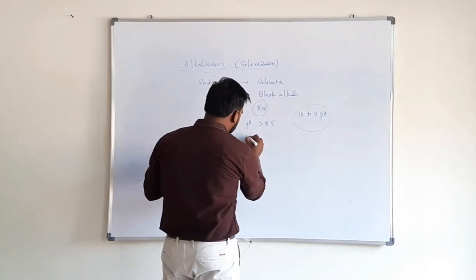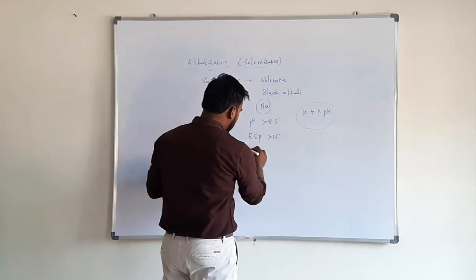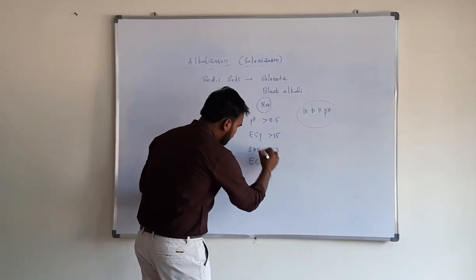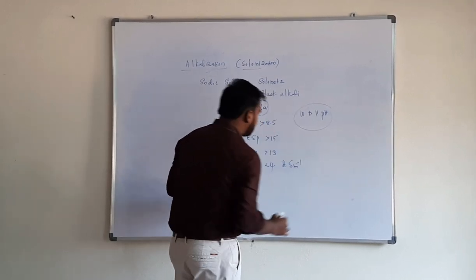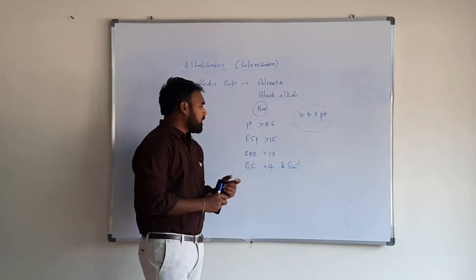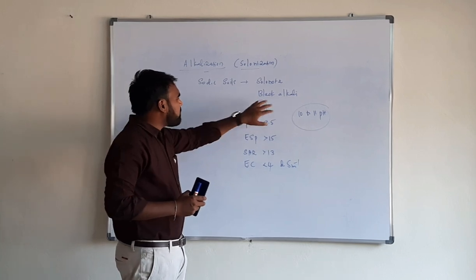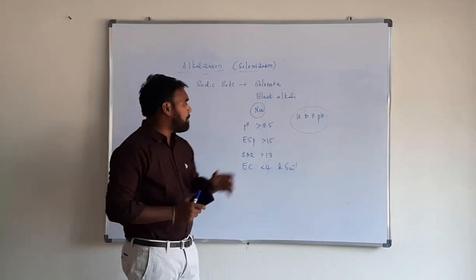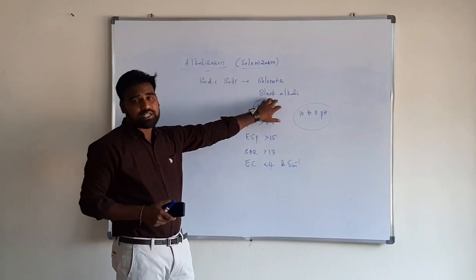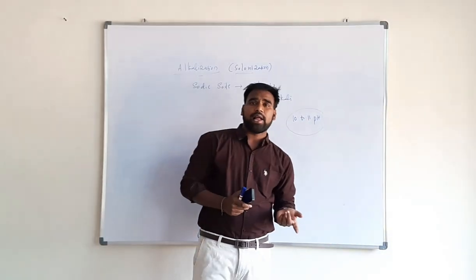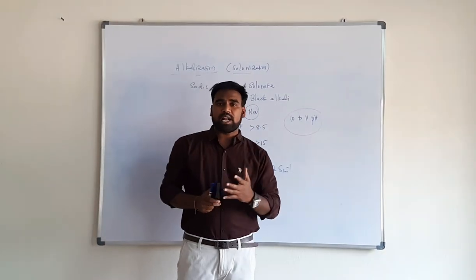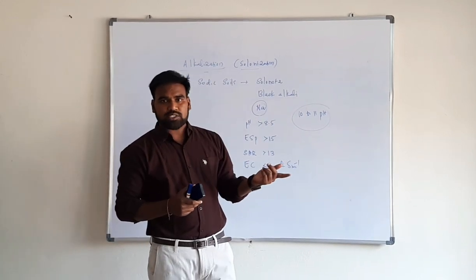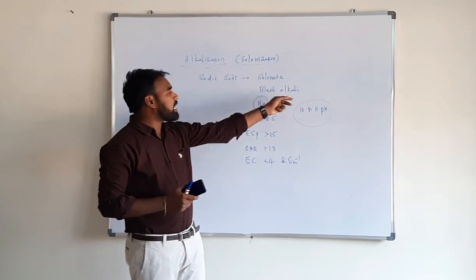Exchangeable sodium percentage in sodic soils is greater than 15, and sodium adsorption ratio is greater than 13. Due to fewer neutral salts, electrical conductivity of sodic soils is less than 4 dS/m. Sodic soils are called black alkali soils because at high pH, sodium disperses with humus, causing organic matter to accumulate on the surface, giving a black color. Saline soils are white alkali soils because evaporation causes salt accumulation on the surface.